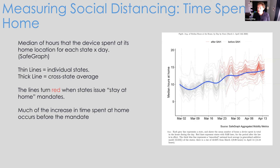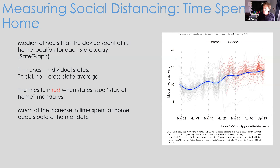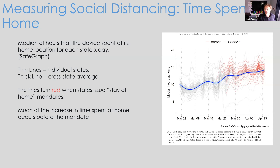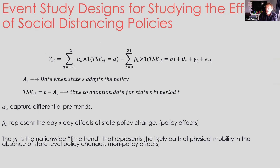If you take these data and aggregate them to the state level and plot out a daily time series, the light gray lines in the graph are showing individual states. The thicker blue line is the cross-state average smoothed a little bit. The gray lines turn red when the state adopts a stay-at-home order, or shelter-in-place order. A first thing to notice is that there was a very large increase in time spent at home — that's one measure of people practicing social distancing during the early part of the epidemic — but most of the growth in time spent at home had already happened by the time states adopted stay-at-home orders.